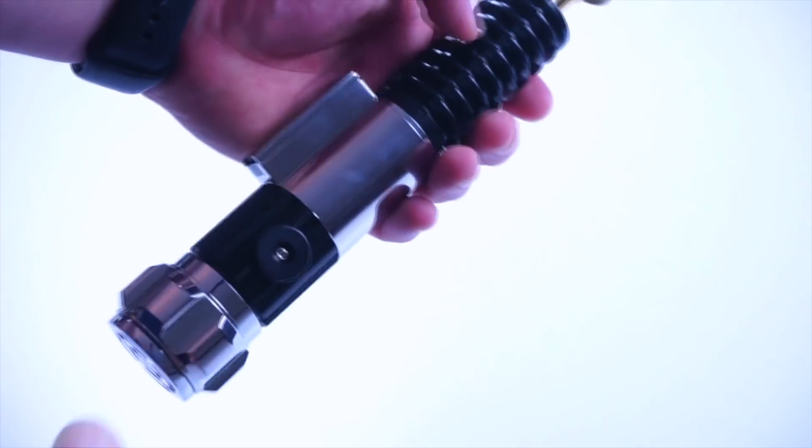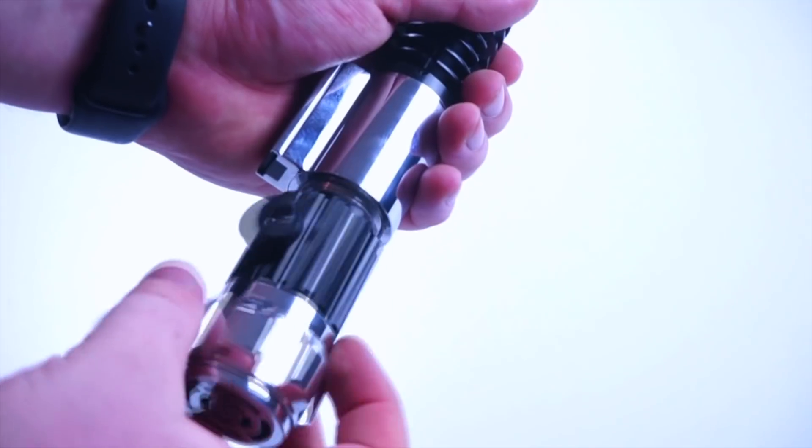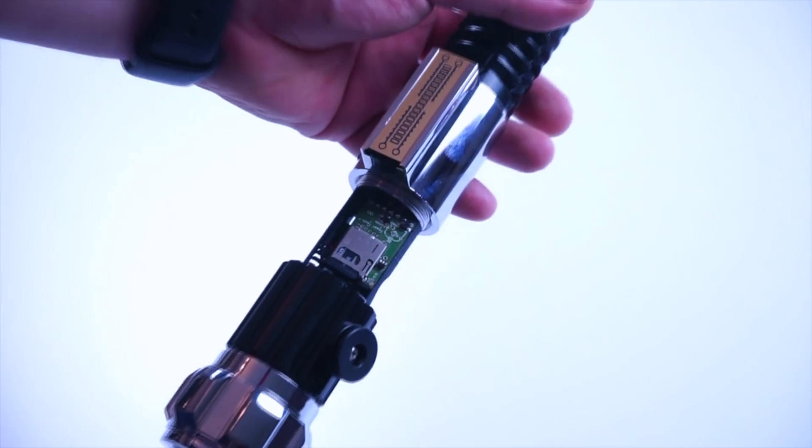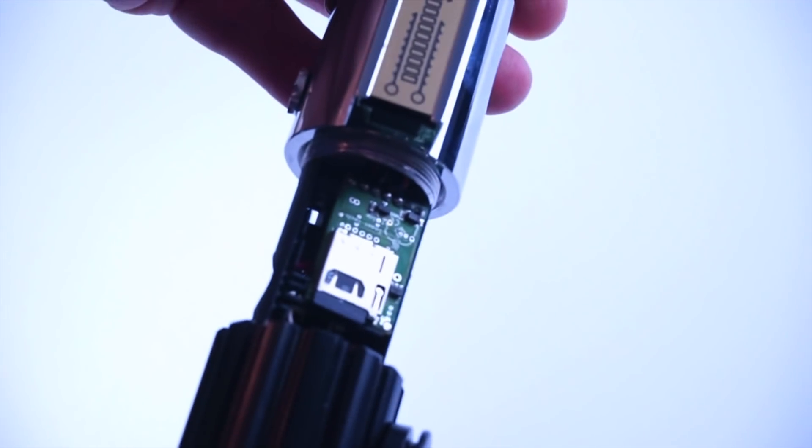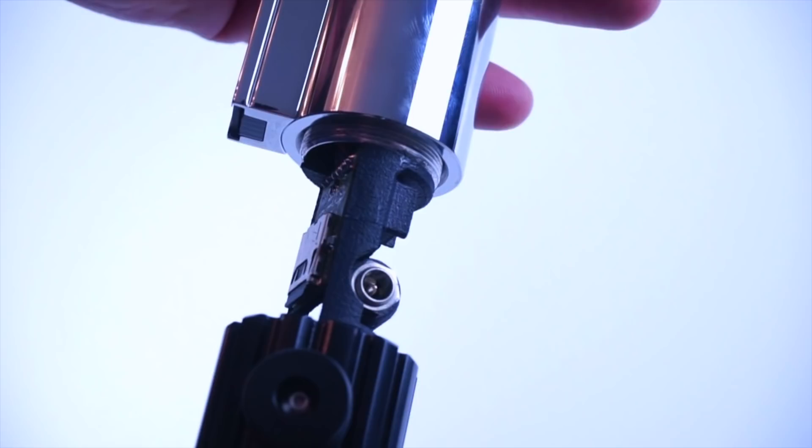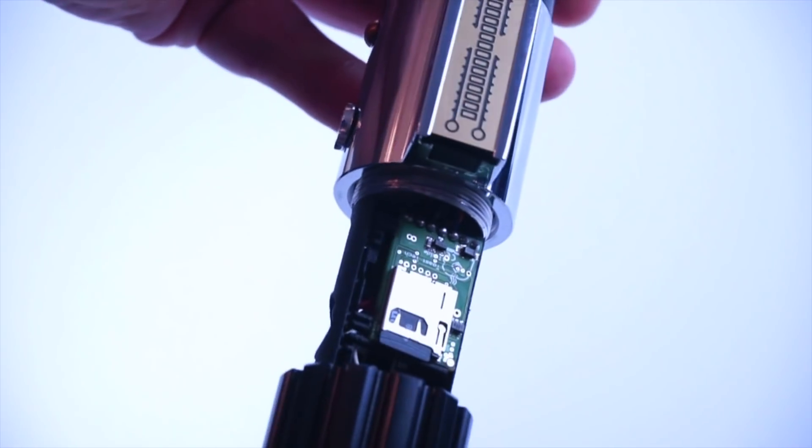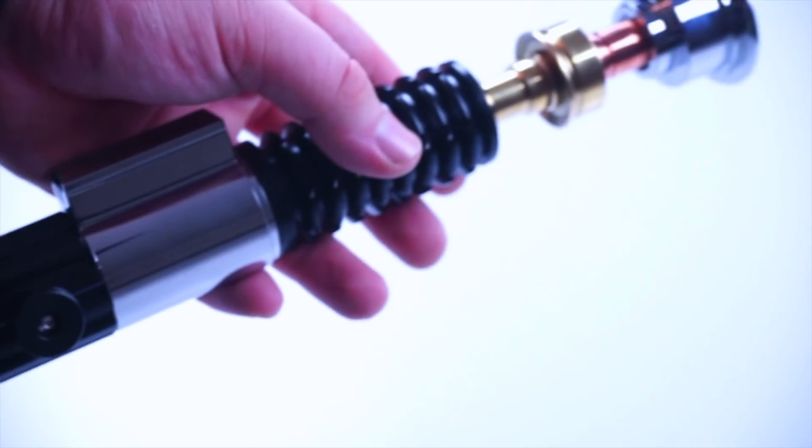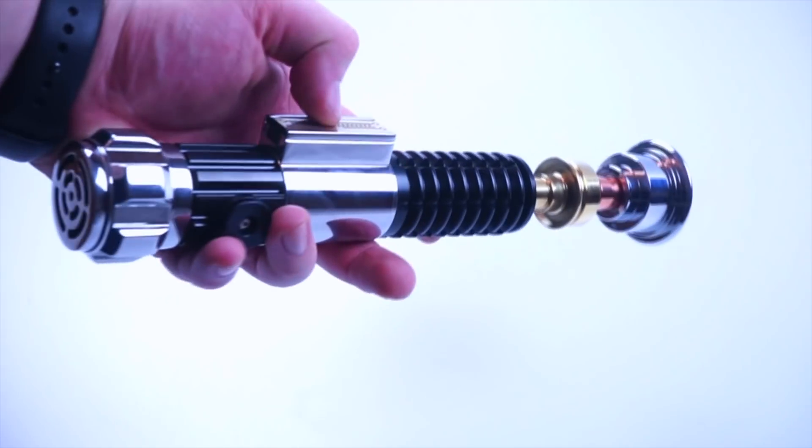When you want to gain access to it, you just unscrew this lower half and you can see you've got board access just here and you've got recharge port access just there. It's got a high amp battery. You'll screw that back on and it's just a nice press, you just go like that.